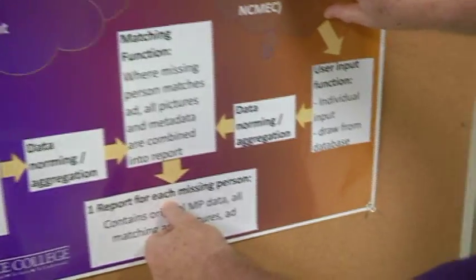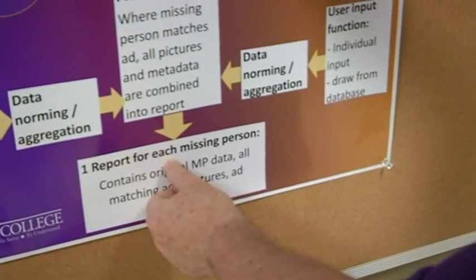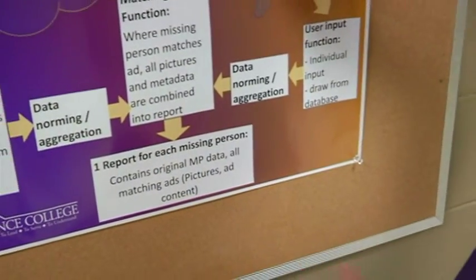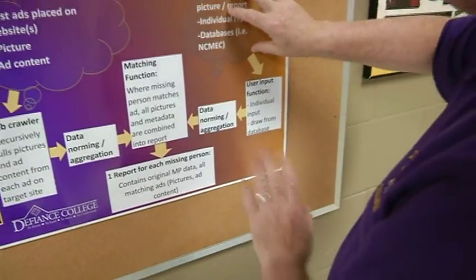If a victim is 14 or 15 years old, that tells law enforcement this is a minor. I don't have to prove force, fraud, and coercion.